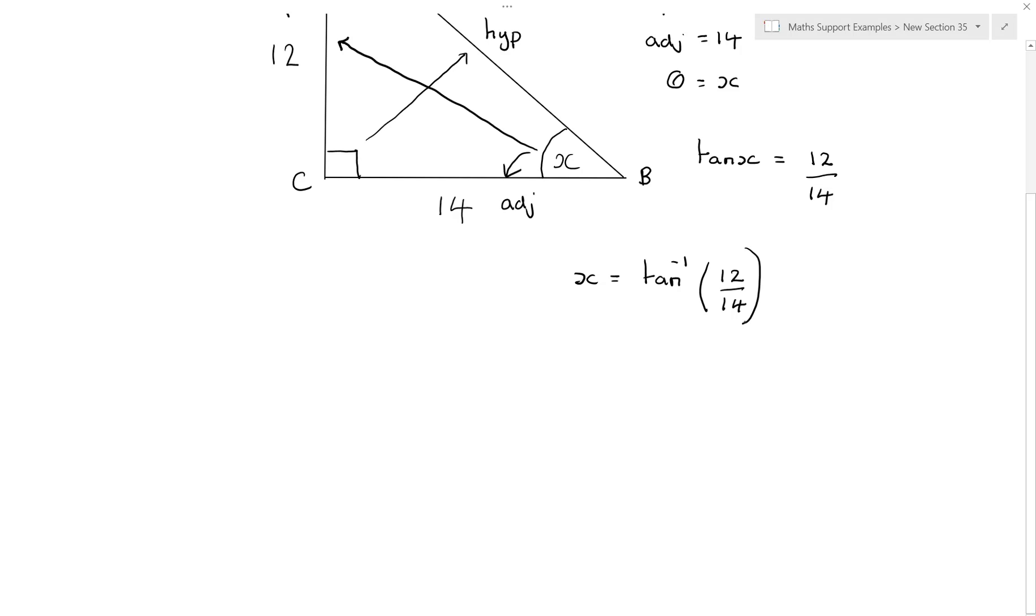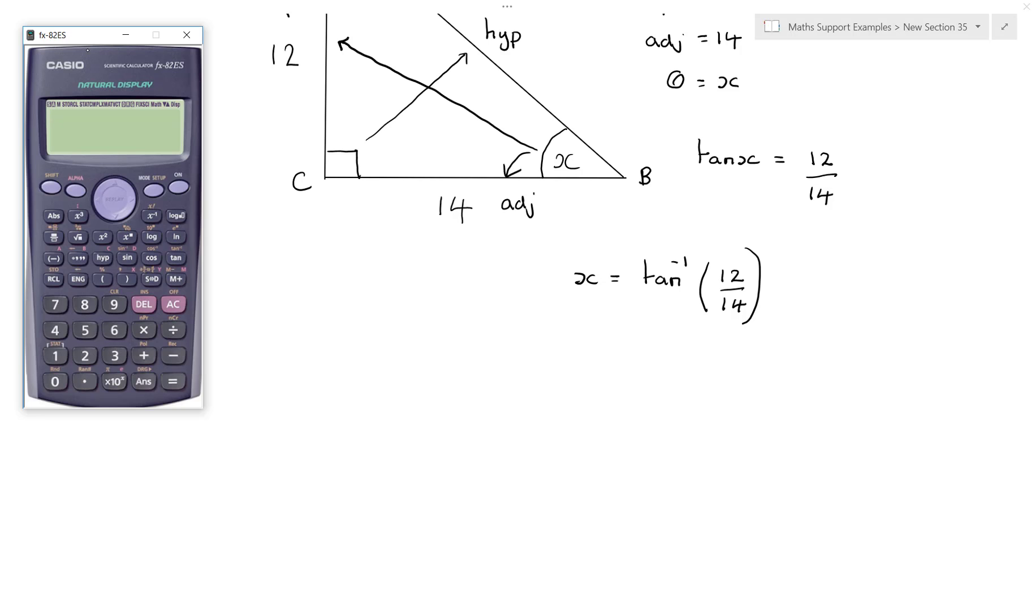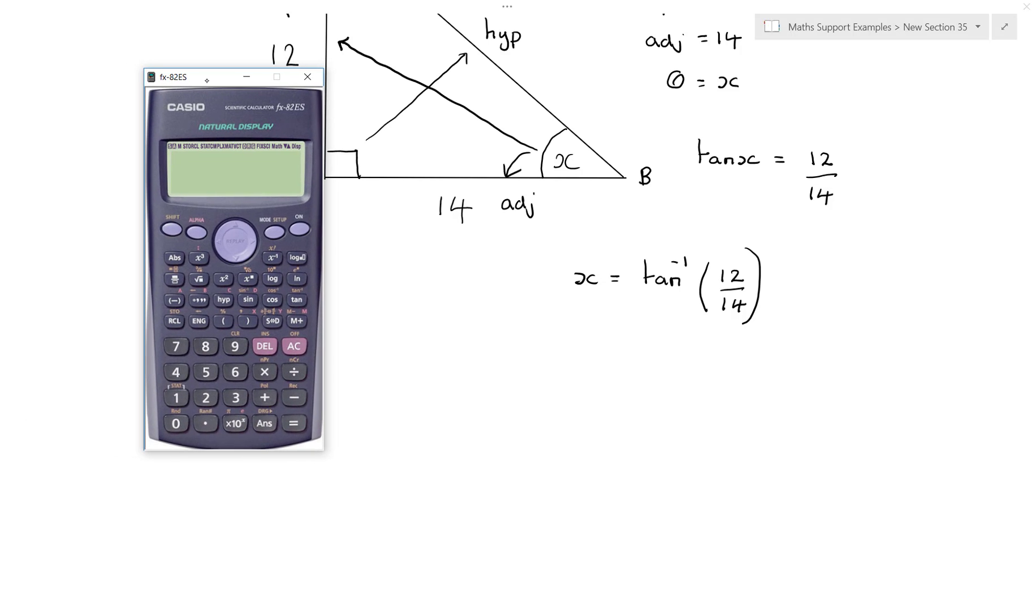Now we're going to have to use our calculator to work this value out. So we look for the tan button, and you notice above it is tan to the minus 1 in yellow. Your calculator might be slightly different. To get the yellow, you press shift, and then the button. You see it now says tan to the minus 1.